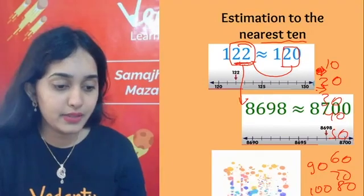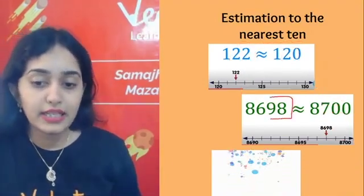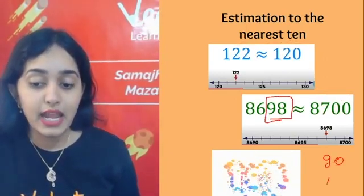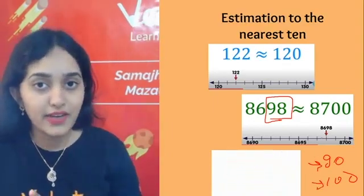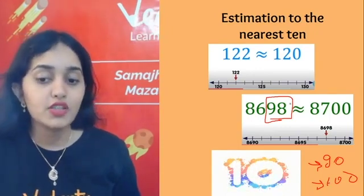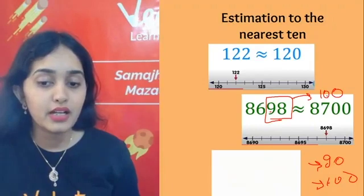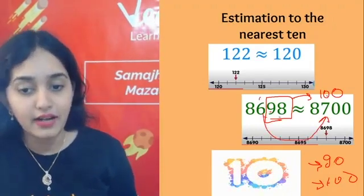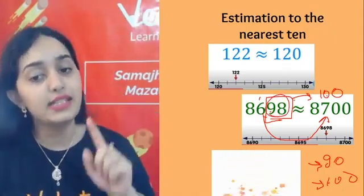Similarly, for 8698: we look at the last two digits — 98. 98 lies between 90 and 100. 98 is nearer to 100 since it is greater than 95. So 98 will be rounded off to 100. When rounded off to 100, the hundreds digit 6 becomes 7 — because 600 becomes 700. So 8698 rounded off to nearest 10 becomes 8700.